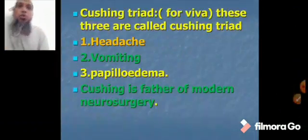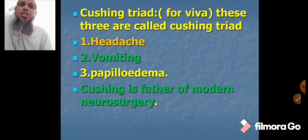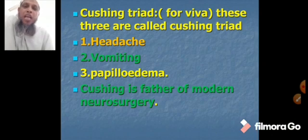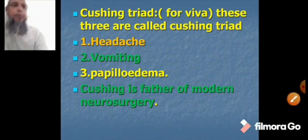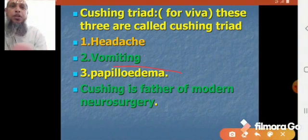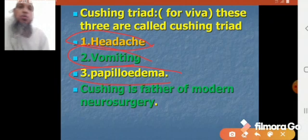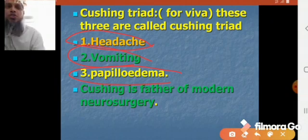Then comes Cushing's triad, which is usually asked in the viva. There are 3 symptoms and signs together called the Cushing triad. Number 1 is headache, number 2 is vomiting, and number 3 is papilledema. Cushing is the father of modern neurosurgery.